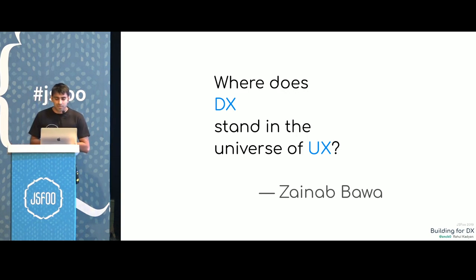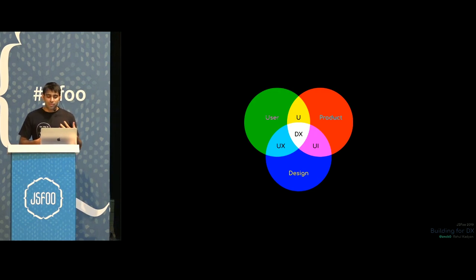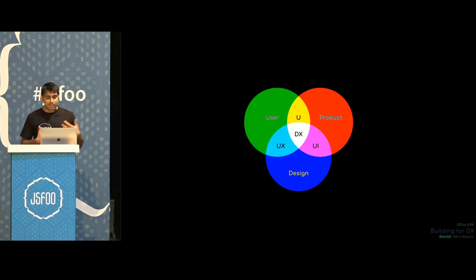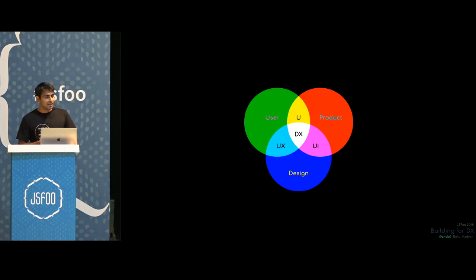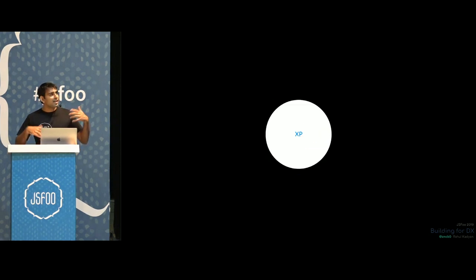There are three key stakeholders in every experience: user, product, and design. When user interacts with product, you get understanding and requirements. When product interacts with design, we get interfaces. When design interacts with user, we get experience. And when all three combine, we get developer experience — that's the white center, which is interacting with all the stakeholders and trying to build what everyone is thinking. The more the intersection, the better the experience.